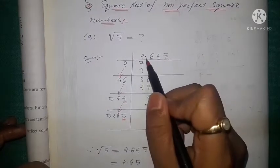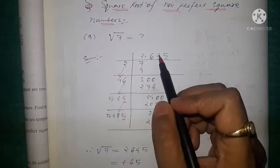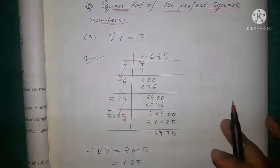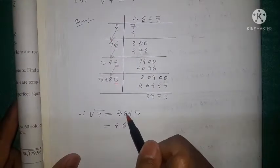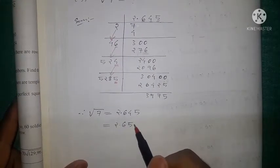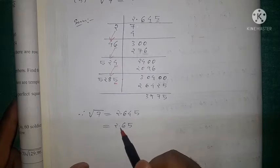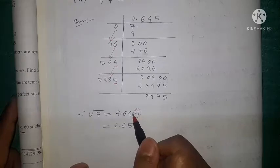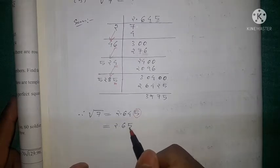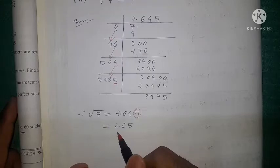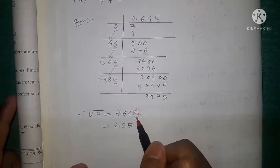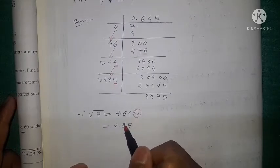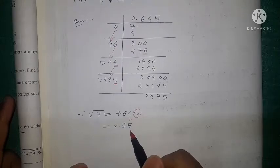We continue only up to 3 decimal places after the decimal. So the square root of 7 is 2.645. We can round this off to 2.65 — since the third digit is 5 or greater than 5, we increase the second digit by 1, writing 5 in place of 4. Now let's move to the exercise.